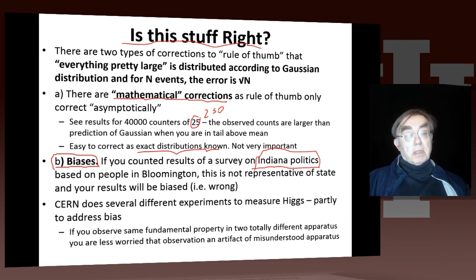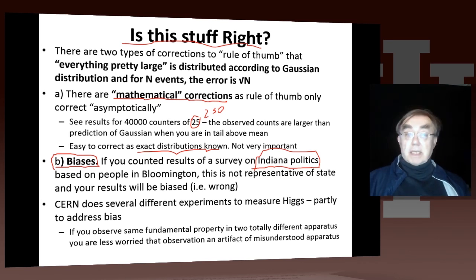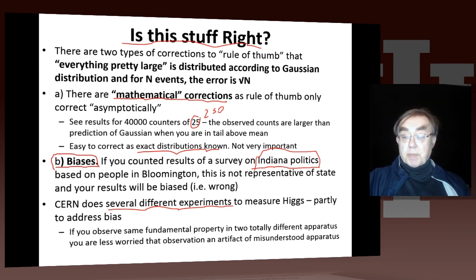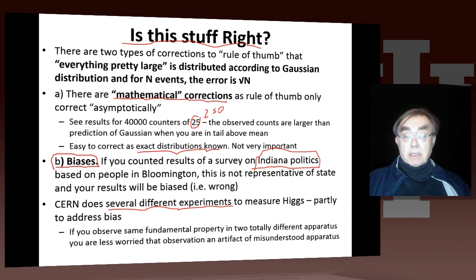As I've mentioned, we do multiple different experiments — two major ones — to measure almost anything, because we want to address bias. So if you see the Higgs in two experiments, which is what they did — they saw it in CMS, they saw it in ATLAS — that means we believe it. And you're less worried that the observations are an artifact of a misunderstood apparatus.